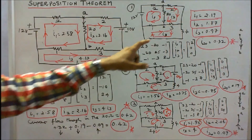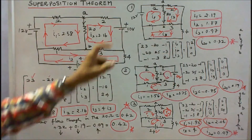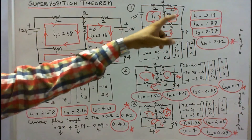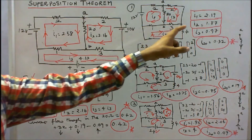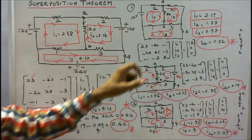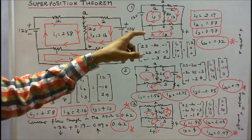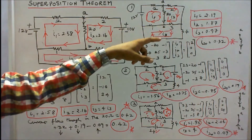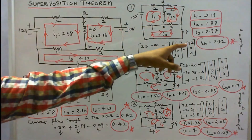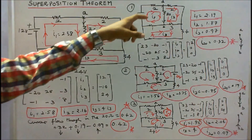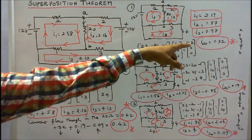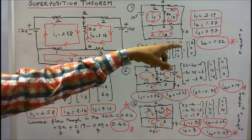With only 12V active, solving gives I1 = 2.19, I2 = 1.87, I3 = 0.97. The current through the 20-ohm resistor is I1 − I2 = 0.32 A, directed toward point B.